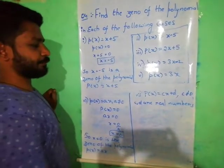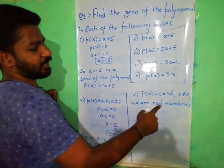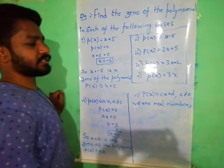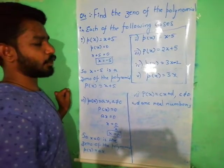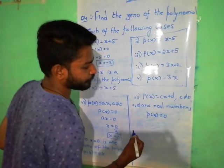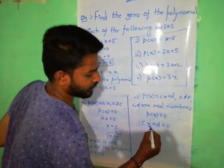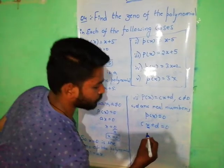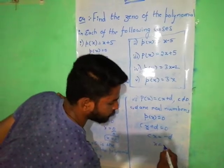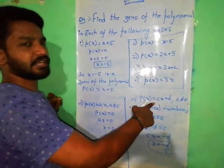Coming to the 7th question: P of x is equal to Cx plus D, where C is not equal to 0 and C, D are real numbers. By solving method, P of x is equal to 0, so Cx plus D is equal to 0. We find the x value: Cx is equal to minus D, therefore x is equal to minus D by C. So x is equal to minus D by C is the zero of the given polynomial.